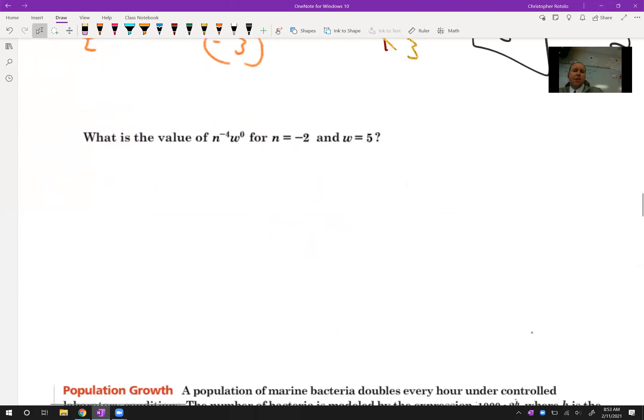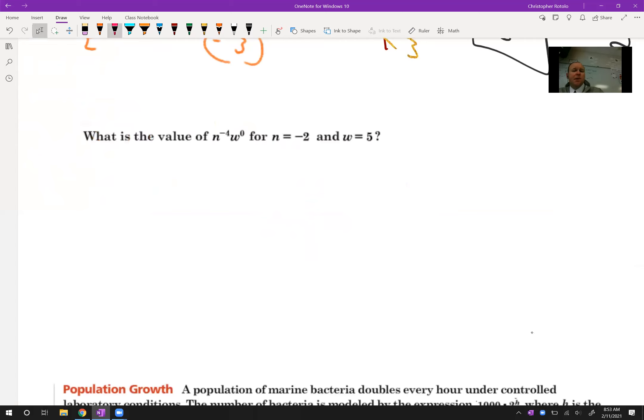Alright, now the reason I like to simplify it first is, you know, kind of based on this problem here. So n to the 4th is going to go on the bottom. W to the 0 power. So it doesn't matter what W's value is. I really don't care because that's going to turn into 1. So now this is all we have to do. Negative 2 to the 4th power. So negative times a negative times a negative times a negative is going to be a positive. So 2 times 2 is 4 times 2 is 8 times 2 is 16. So since this is negative 2 being taken to the 4th power, we're going to end up with a positive. If it's odds, it's going to be negative. It's positive because the exponent is even.